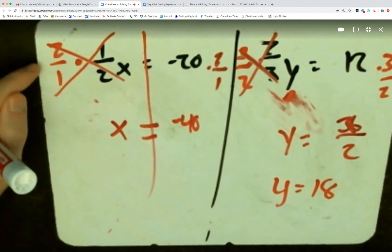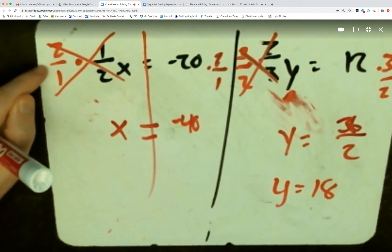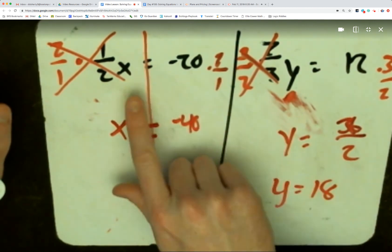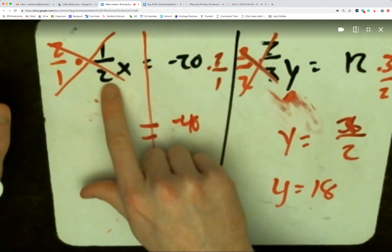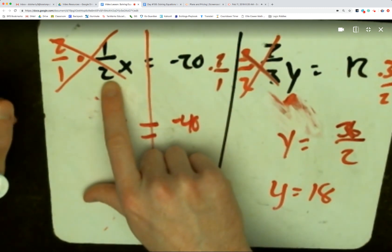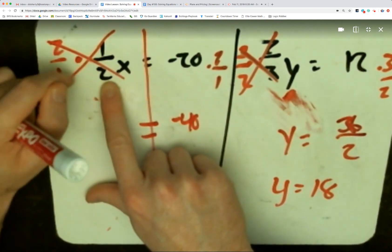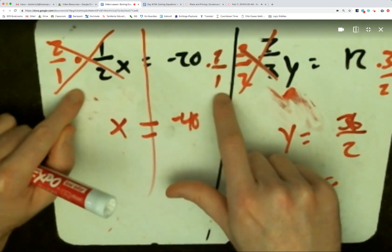Here again we see the big key: dividing by a fraction just means to flip and multiply, or multiply by the reciprocal as we now know that word means. So hopefully every time you see the variable has a fraction as the coefficient, you know all you need to do is multiply by the reciprocal of that fraction—flip the fraction upside down and multiply both sides of the equation by that.